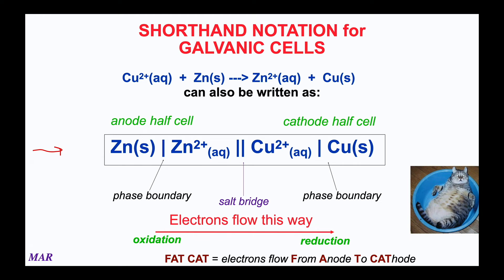'Fat cat' means from anode to cathode — that's another helpful mnemonic. Electrons flow from the anode, from the site of oxidation, to the cathode, the site of reduction.